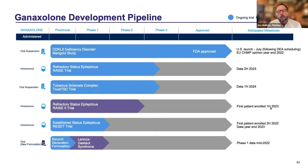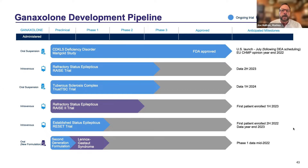We're developing oral and IV forms of ganaxolone in several conditions. We were recently approved — as was just mentioned — for CDKL5 deficiency disorder, specifically seizures associated with CDKL5. We anticipate launch in July.